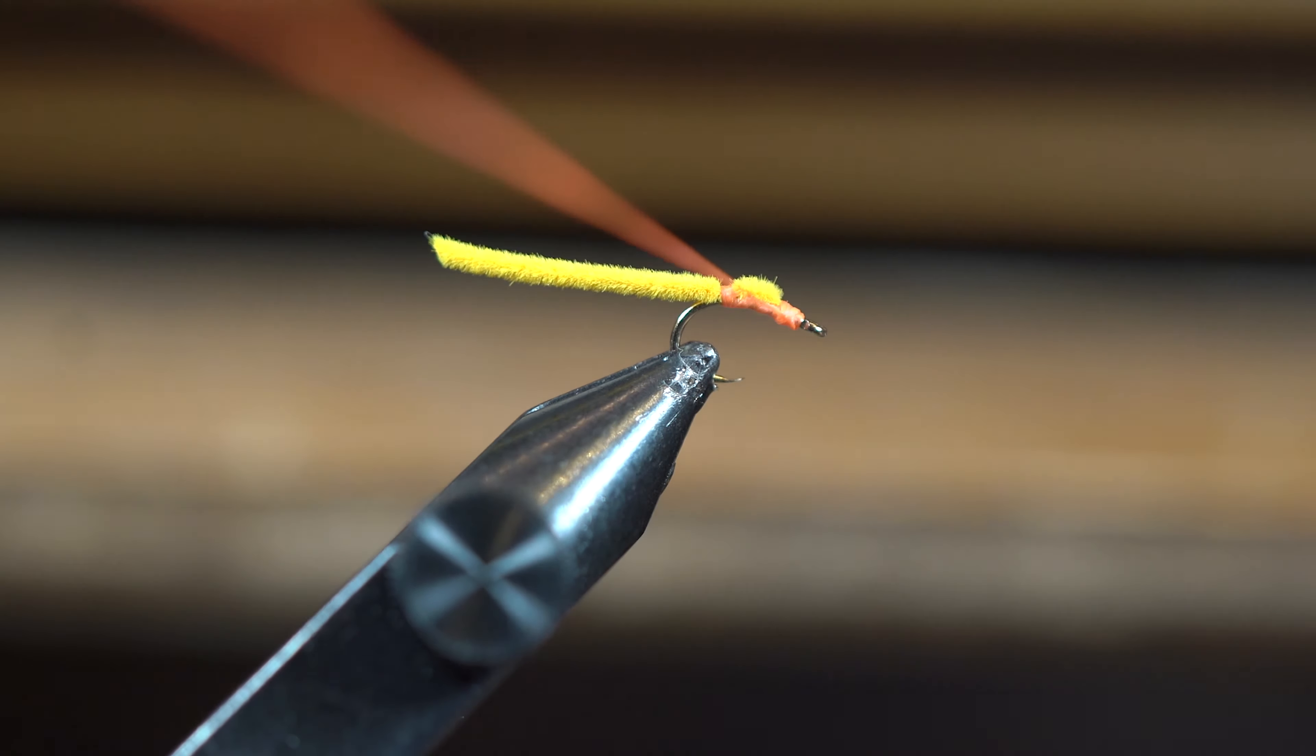Then I'm going to get our trusty UV glue and put some of it on the front of this fly. I like using the thick UV glue because it's got a good viscosity and it's easier to work with.